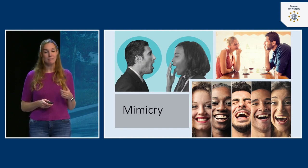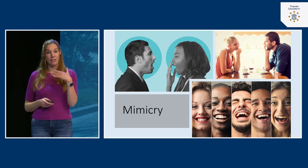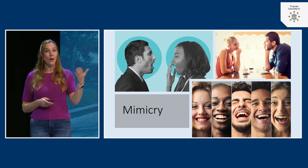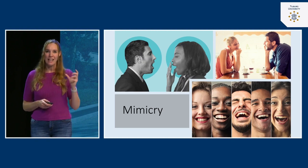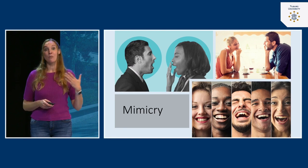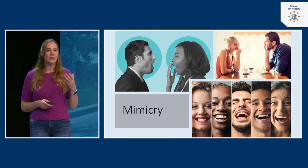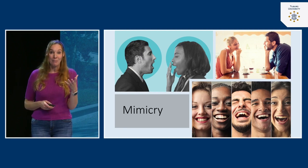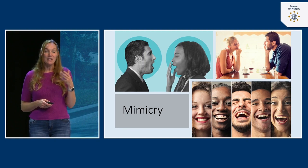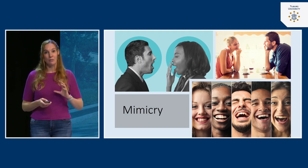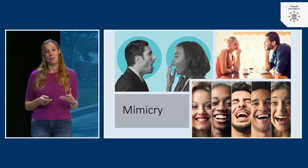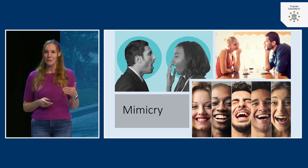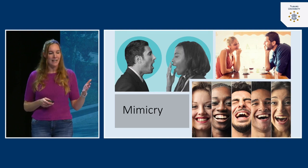Mimicry is actually visible in the brain. If you put people in a scanner and show them certain behaviors like yawning or smiling, you see that the areas in the brain that are involved in performing that movement themselves actually light up. This is called audio-motor action — just seeing a person behave in a certain way, or even thinking about that behavior, activates the brain areas related to conformity.